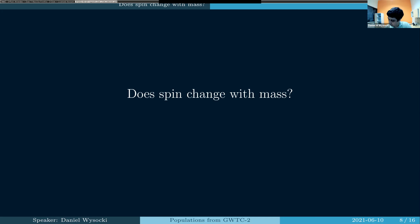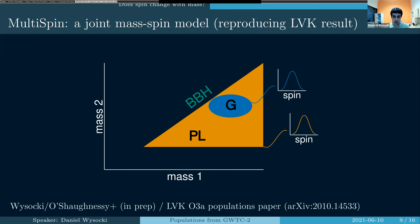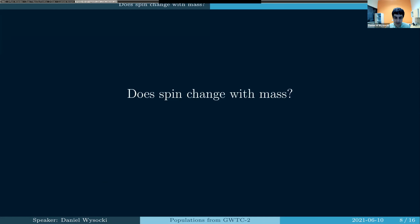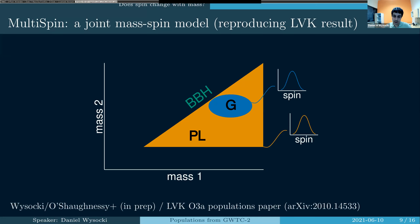I'm going to repeat the multi-spin model analysis, but go into a little more detail than what appeared in the LIGO paper. This is a complete rerun using the open data and not using LIGO resources directly, although it is exactly the same model and almost exactly the same code with some slight tweaks and improvements on my end.